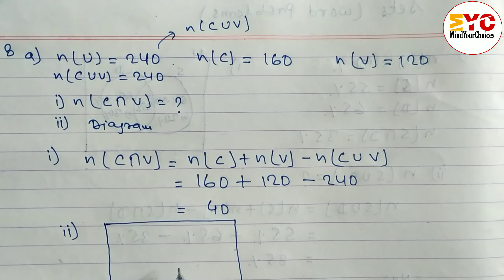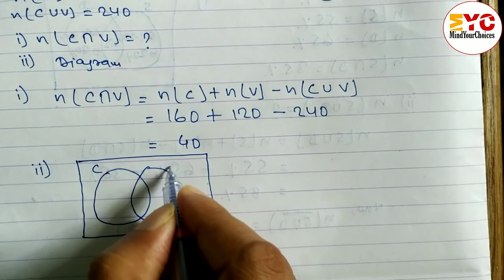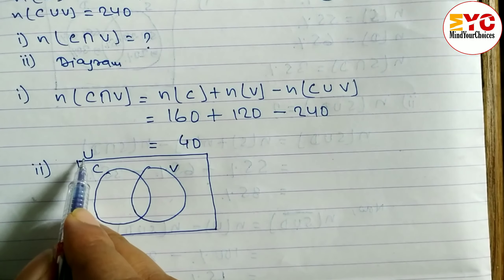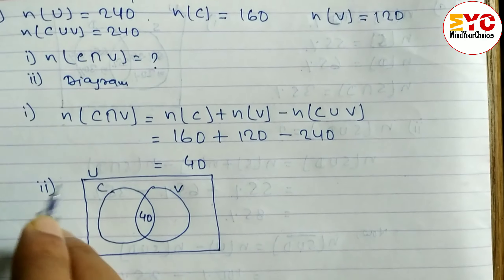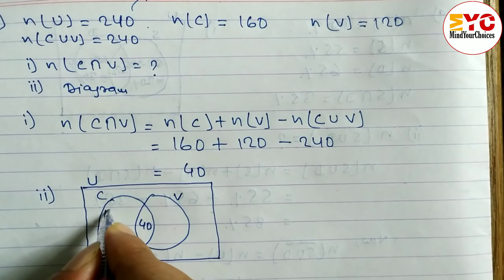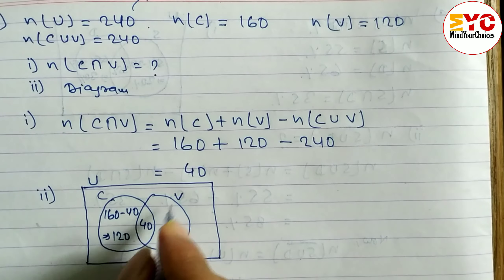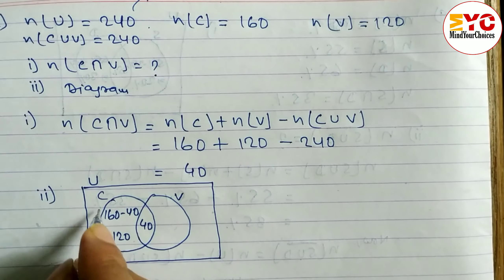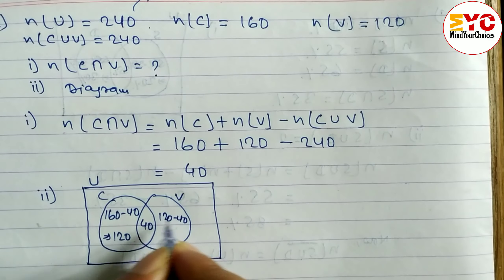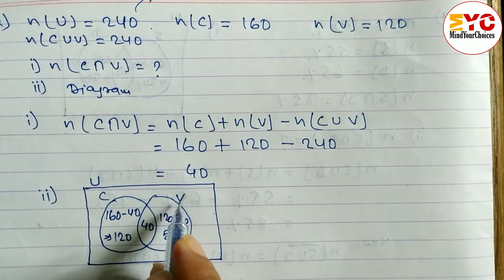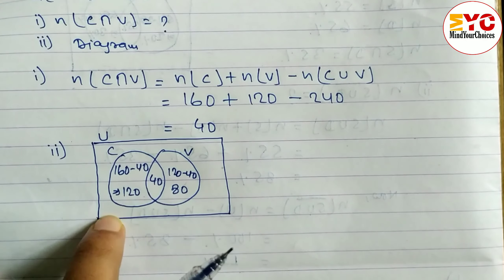Let's draw the diagram — this circle for cricket and this one for volleyball. At the intersection we write 40. For cricket only: 160 minus 40 equals 120, so 120 students like only cricket. For volleyball only: 120 minus 40 equals 80, so 80 students like only volleyball. Outside the circles we write nothing — there is no one who doesn't like cricket or volleyball.